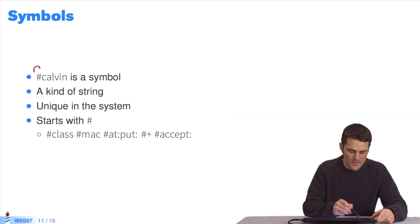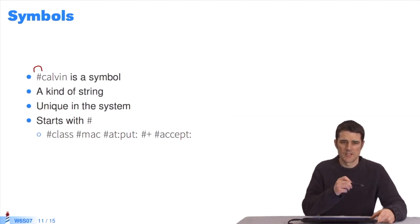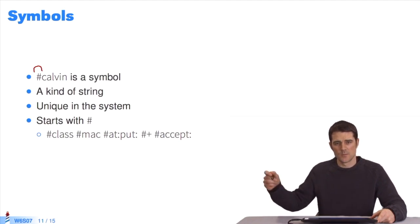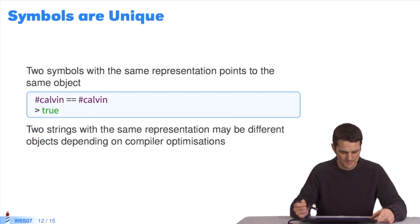Now for symbols. Syntactically speaking, symbols start with a hashtag, then a string of characters. This is a literal symbol. It's a kind of string, but be careful, they're unique in the system. If I write hashtag blah blah, anywhere in my program. Anywhere else in the program this appears, I'm designating the same object. It's the same instance. So symbols are unique.